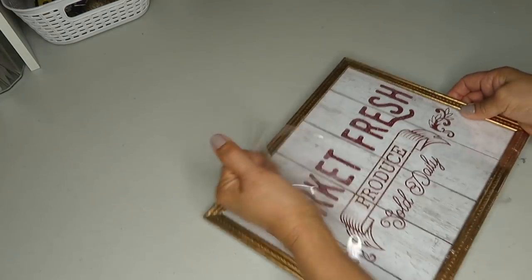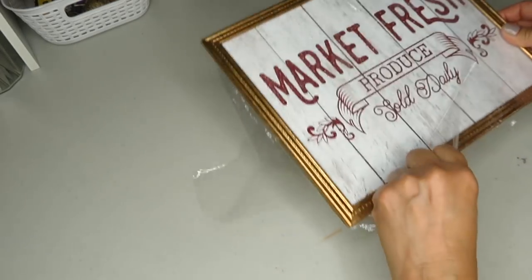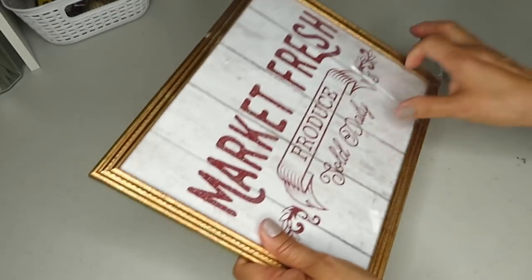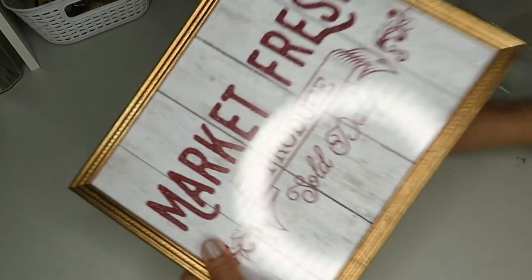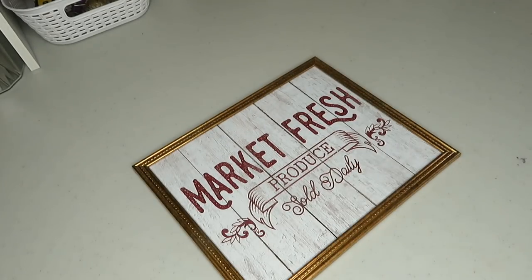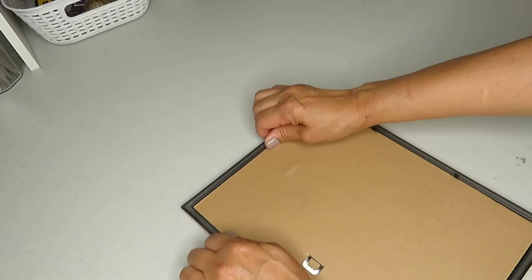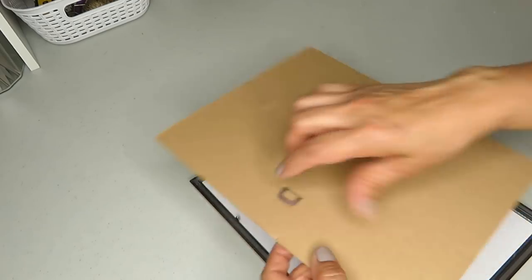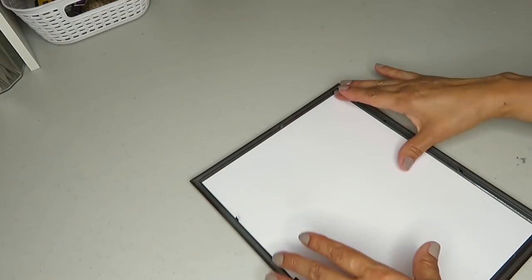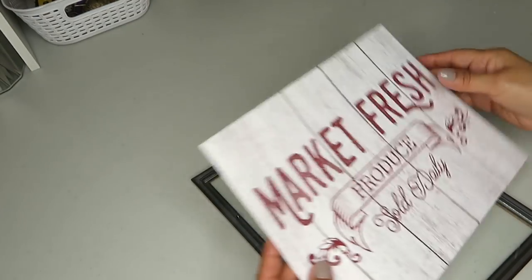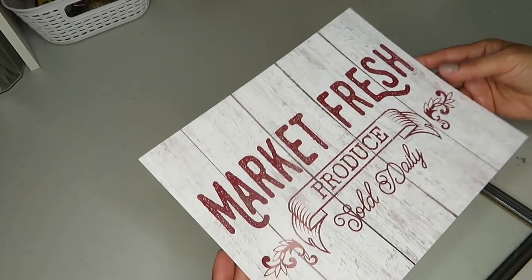I'm gonna start by removing all the wrapping of this picture decor, then take out all the backing, the glass, and the paper picture. Once I'm done, I'm gonna start arranging my blocks and how I want to hot glue them around the picture frame.